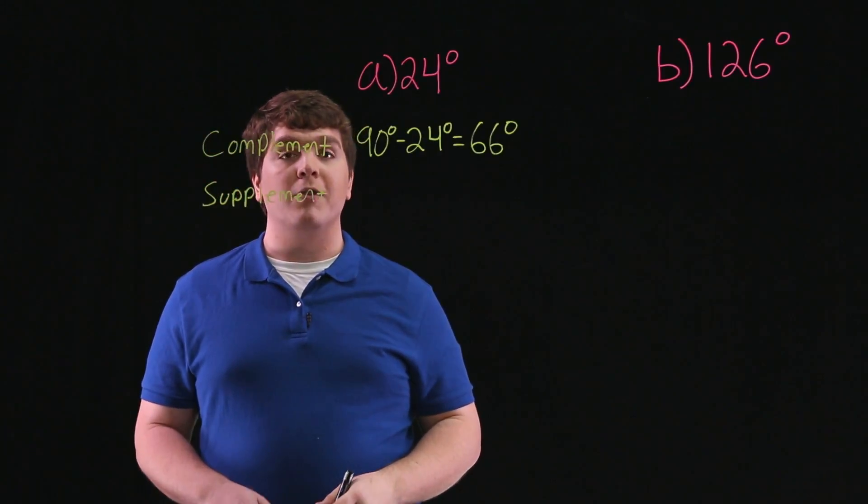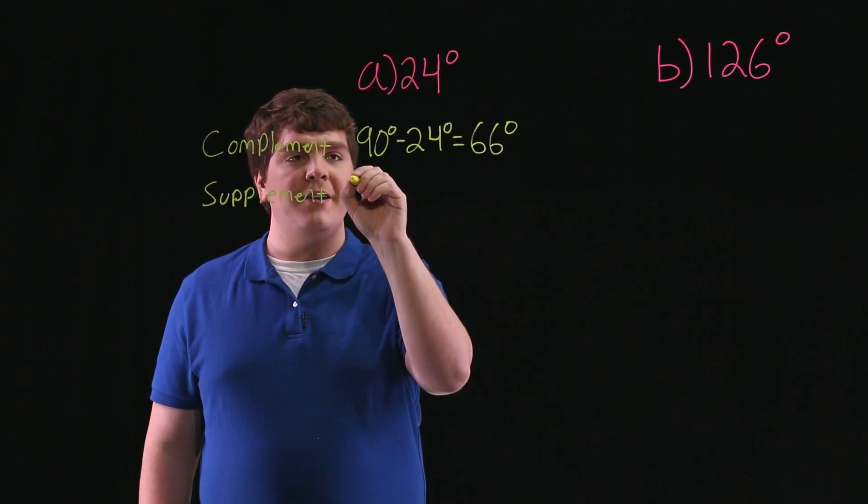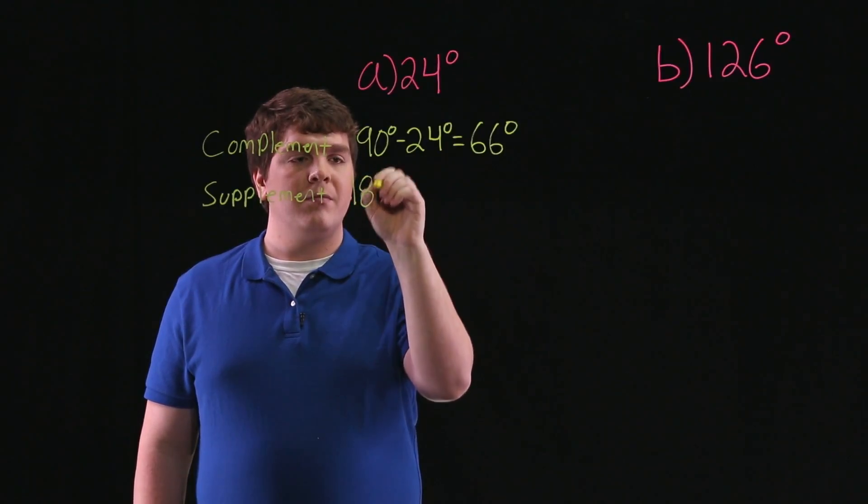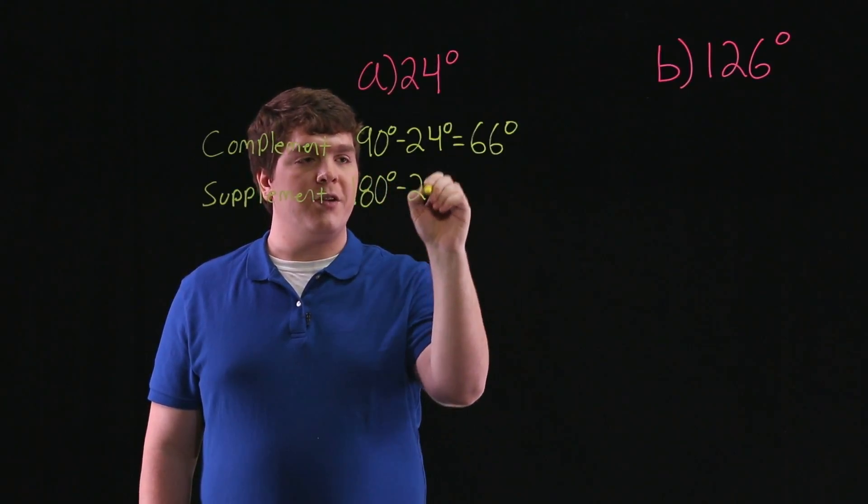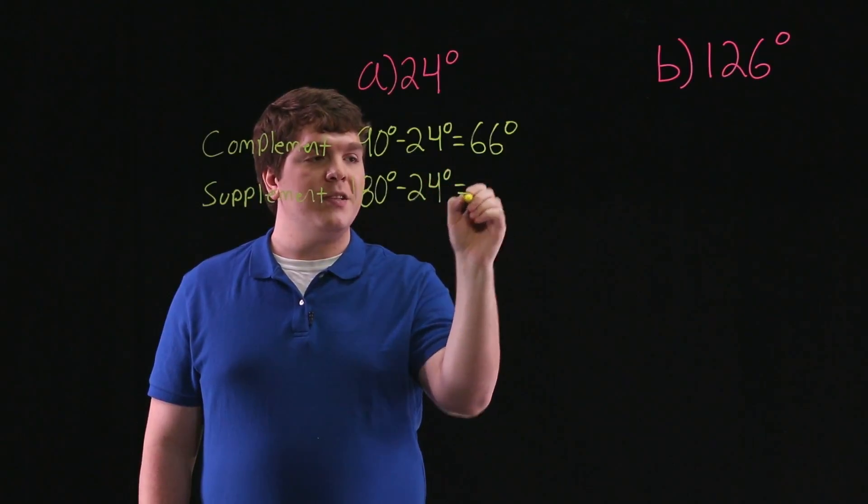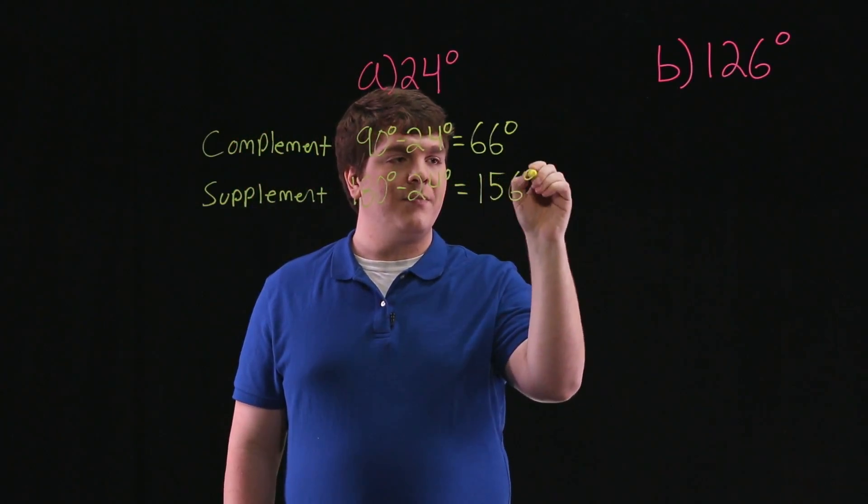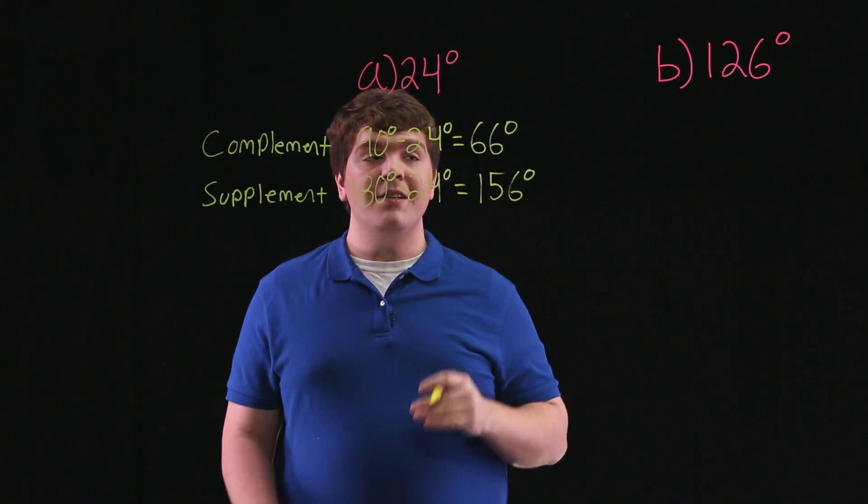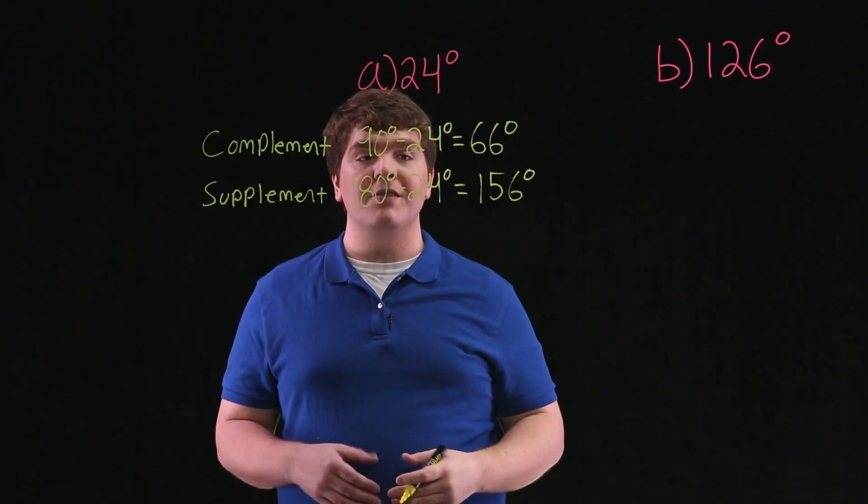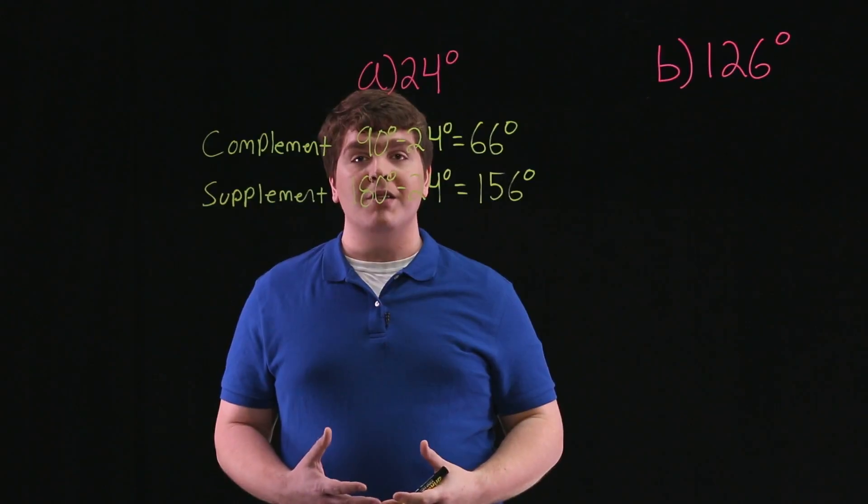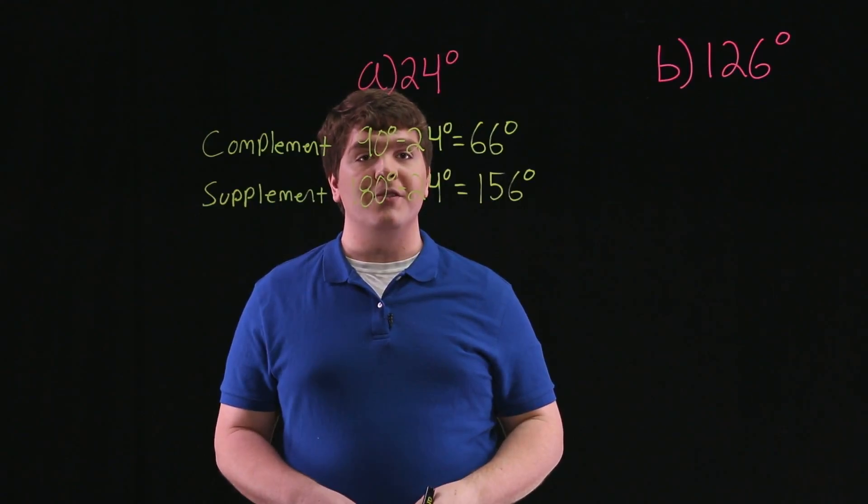To find the supplement to 24 degrees, we'll find 180 degrees minus 24 degrees, which is equal to 156 degrees. And again, it's easy to check that 156 degrees and 24 degrees are supplementary, as their sum is 180 degrees.